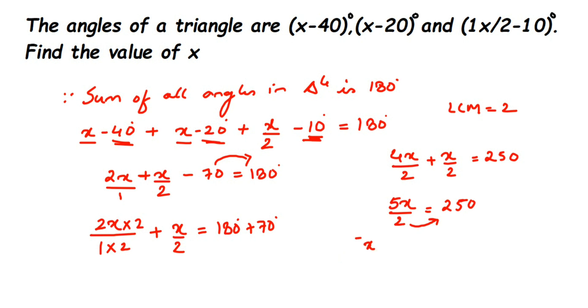5x equals 250 multiplied by 2. I won't multiply yet because next the 5 will come in the denominator. To get x by itself, transpose the 5. Since 5 is in multiplication, it comes in division on the other side.